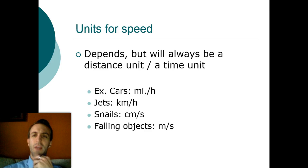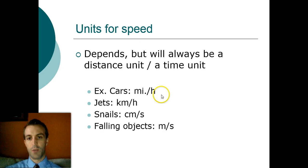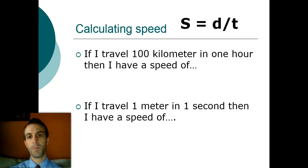When you're picking out a unit for speed, it depends on what you're measuring, but it will always be distance over time. For example, in cars we use miles per hour. In jets, maybe kilometers per hour, sometimes miles per hour as well. With snails, it would be stupid to use miles per hour because it's not going to be that much. They're very slow. It would be more likely to be centimeters per second. Falling objects is just about always meters per second, unless it's a meteorite or something like that.